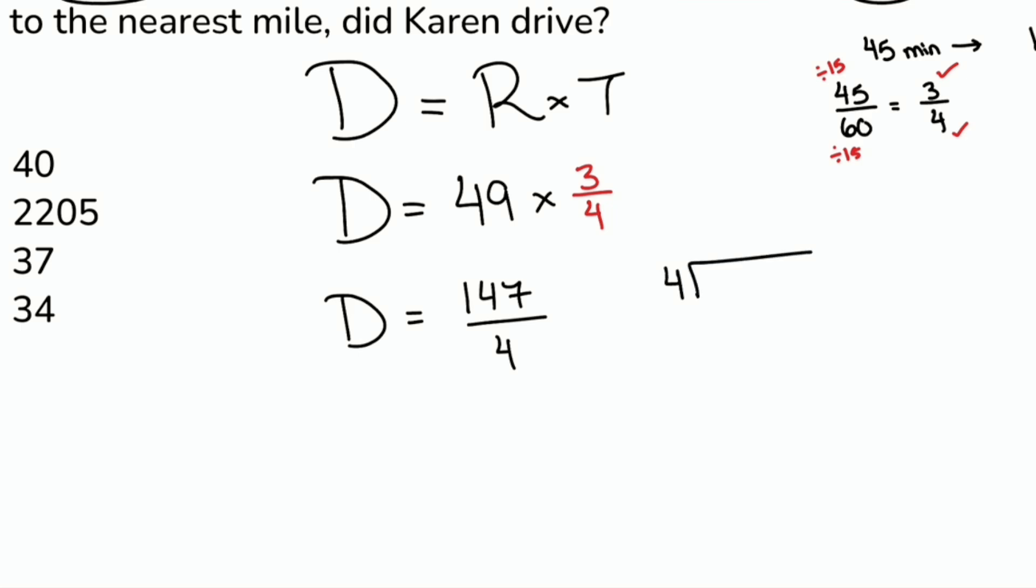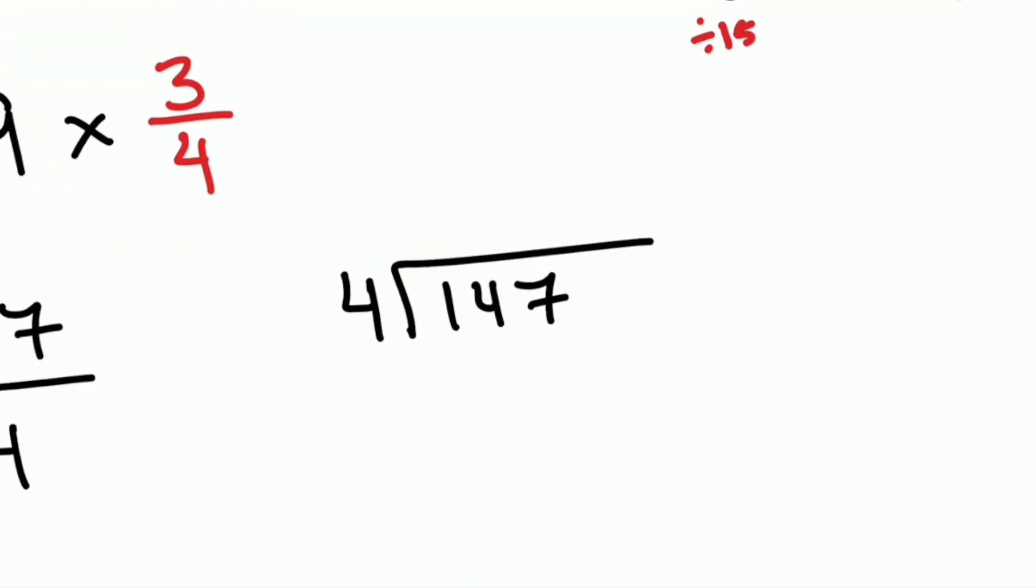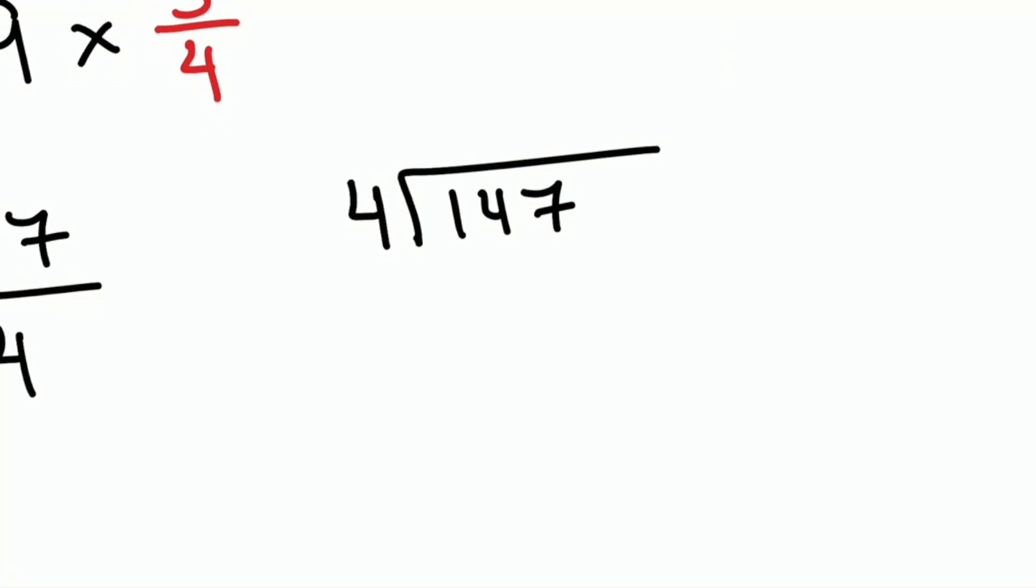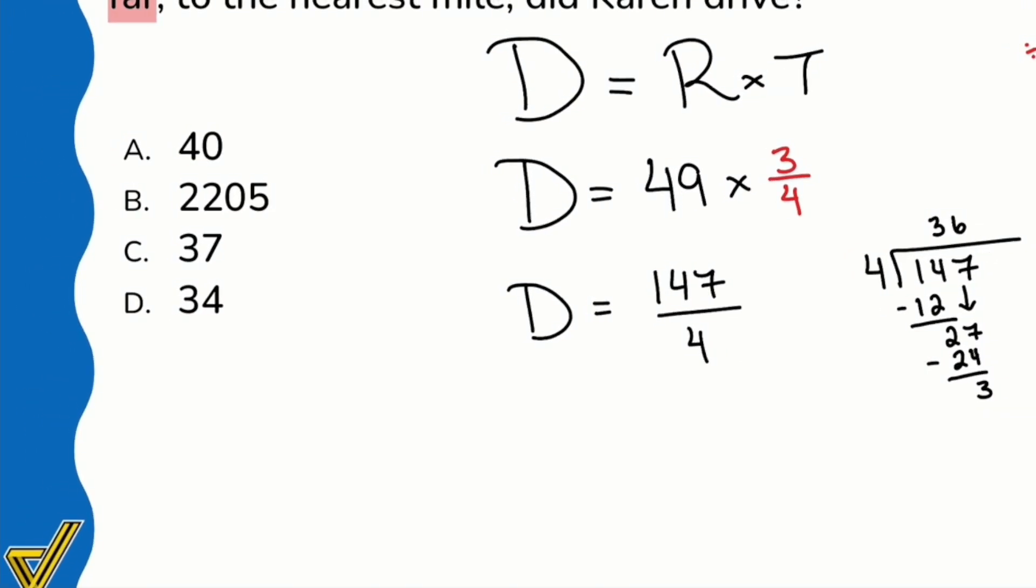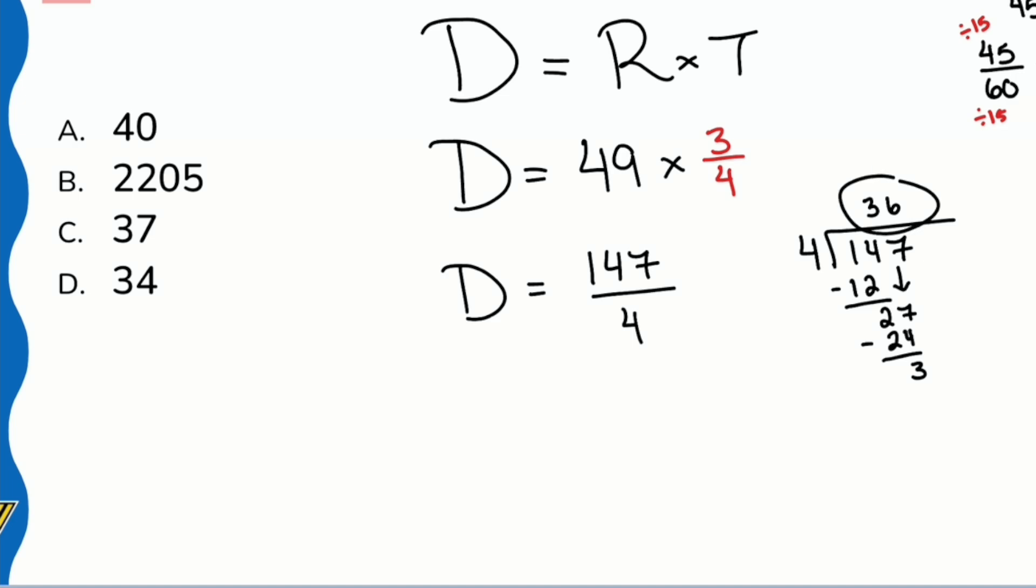Right here. Zoom on in. 4 goes into 1, it doesn't. 4 goes into 14, that's 3 times. We have 2 left. Bring that 7 down. 4 goes into 27, that'll end up being 6. And so we subtract 24, giving us 3 left over. And if we want to, we can continue or we can see if our answer is going to be somewhat near there. Notice that we have 36. The answer here, 37. That means that we're going to have to round up. I don't see a 36 down here anywhere. So I don't have to do any more work.